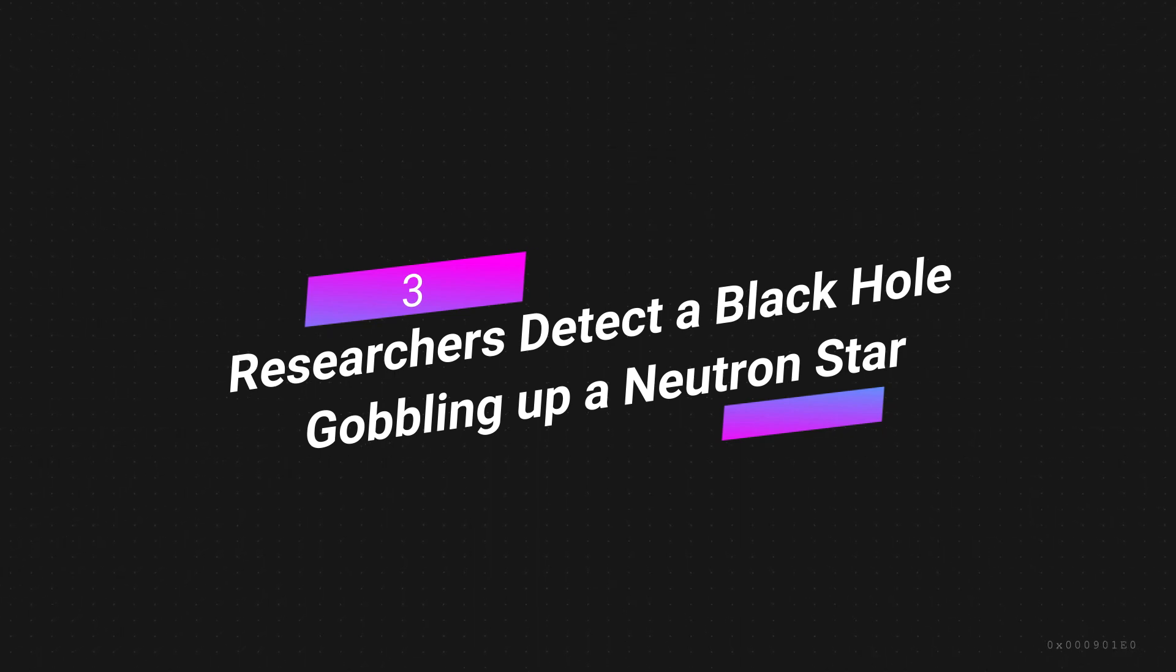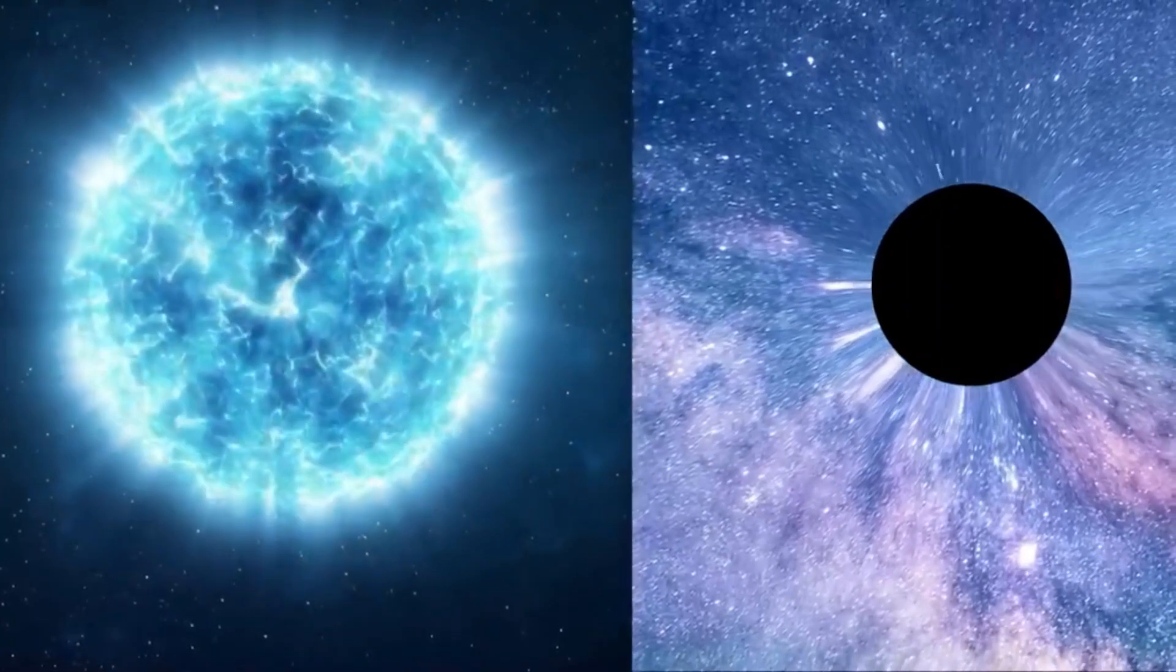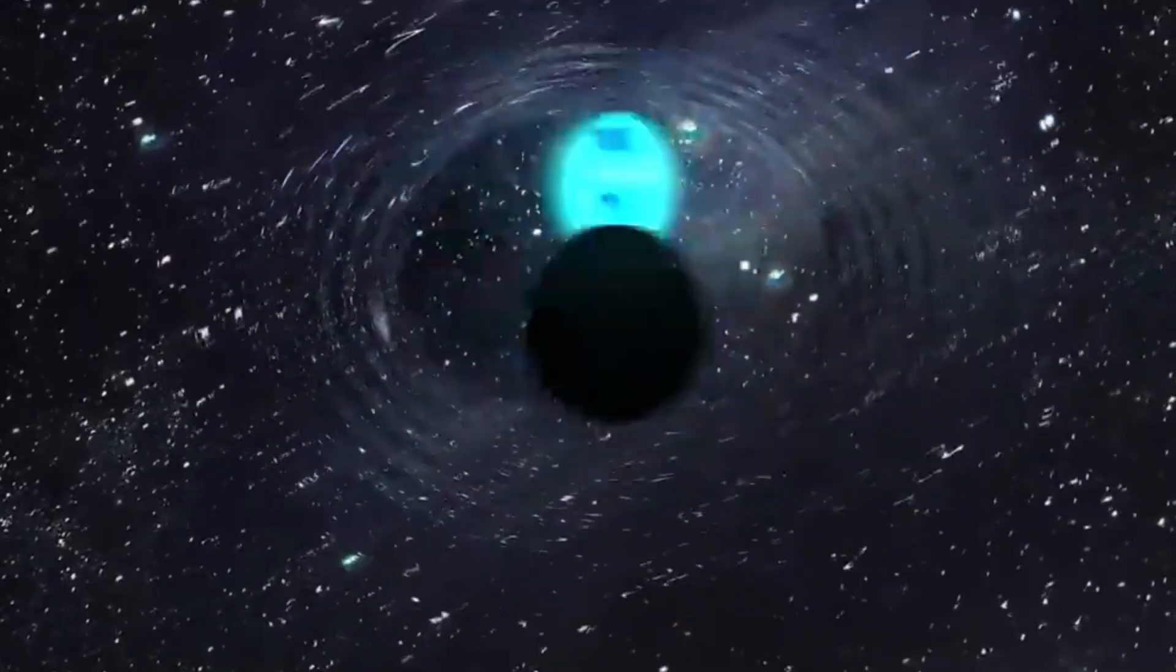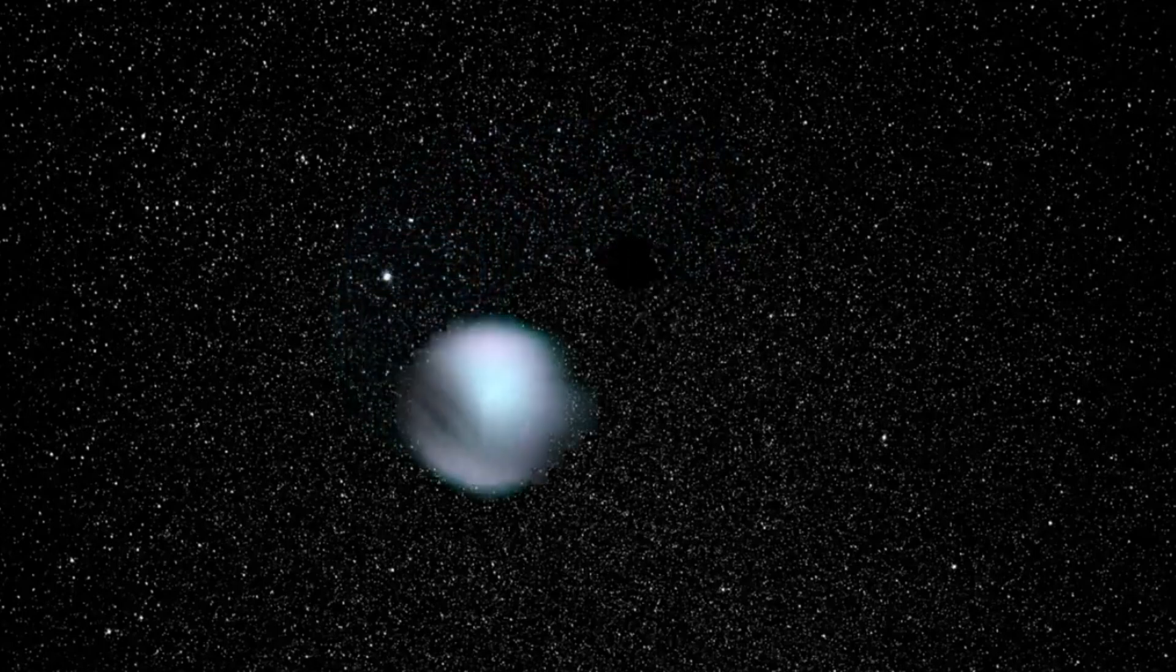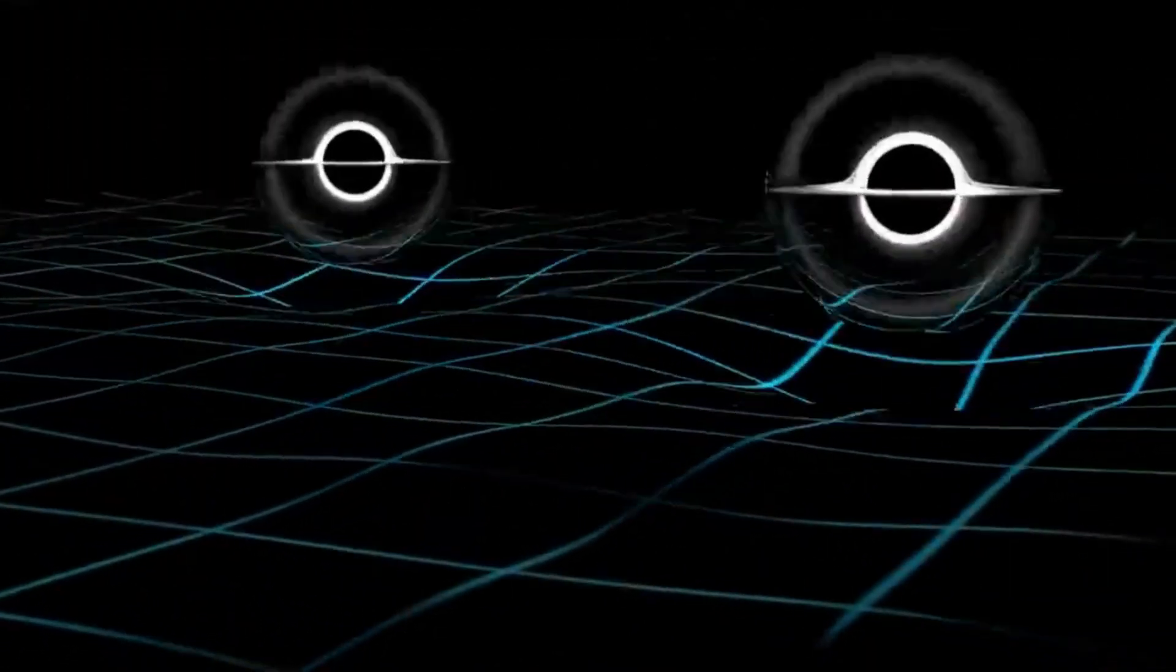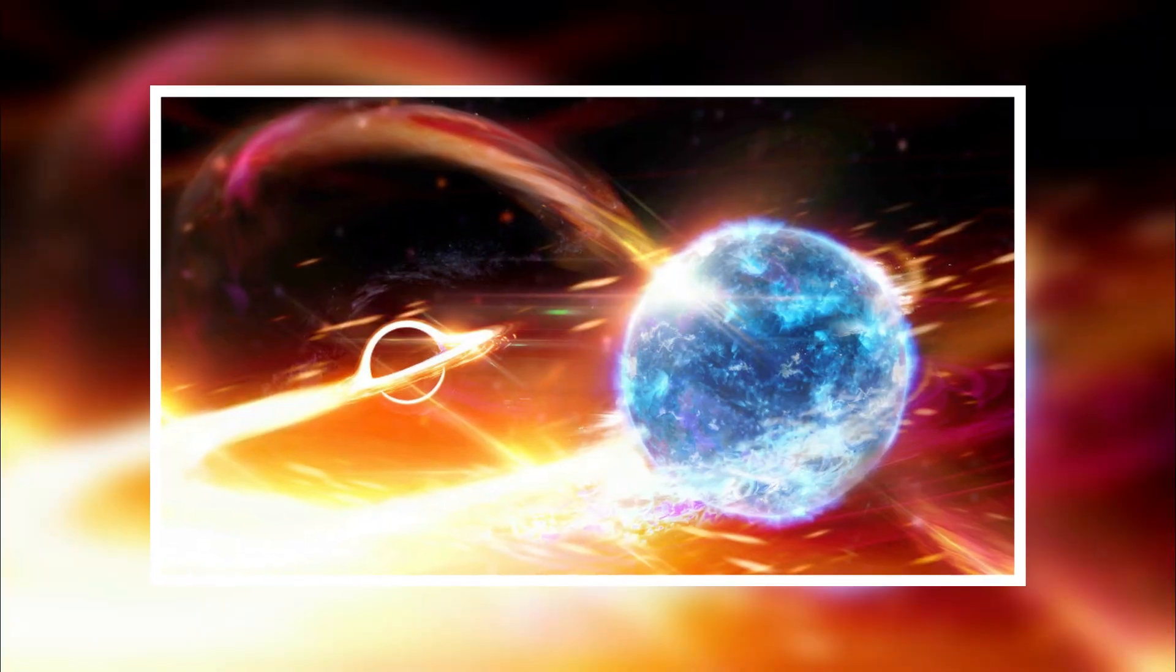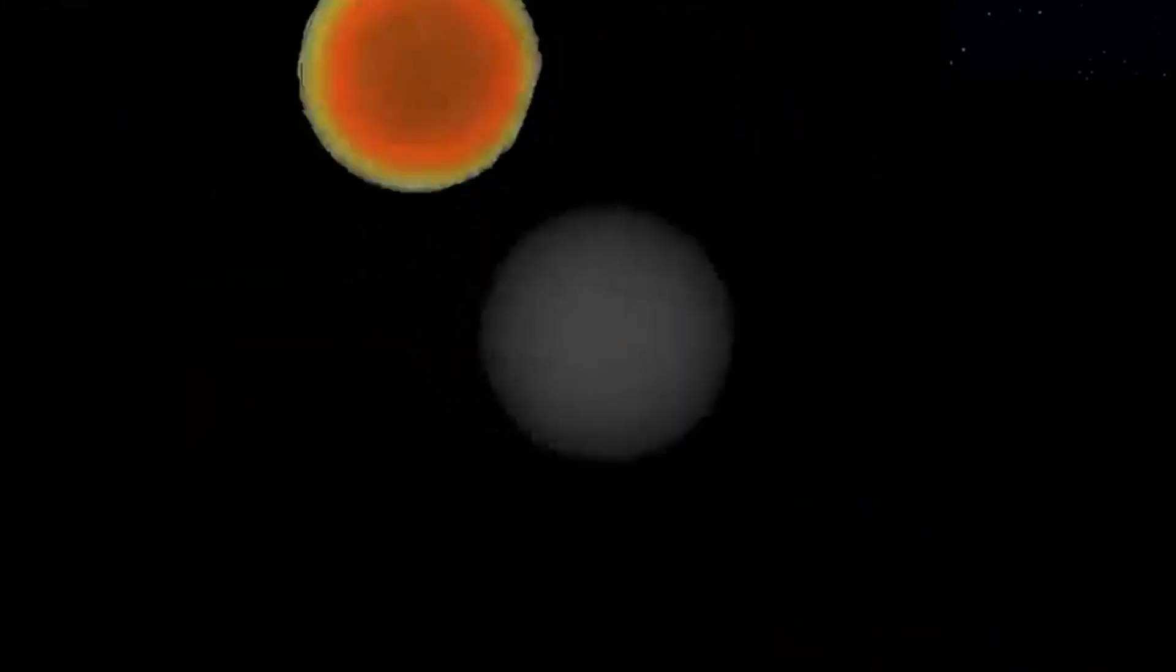Number 3: Researchers detect a black hole gobbling up a neutron star. Black holes and neutron stars are some of the most dense and strange things in the universe. When they hit, everything starts to burn. When the two titans crash into each other, they do so with so much force that huge waves spread through space and time. In the past few years, scientists have seen two black holes and two neutron stars collide. But until recently, it was much harder to take a picture of a black hole and a neutron star coming together. After a long time of waiting, two came at once.